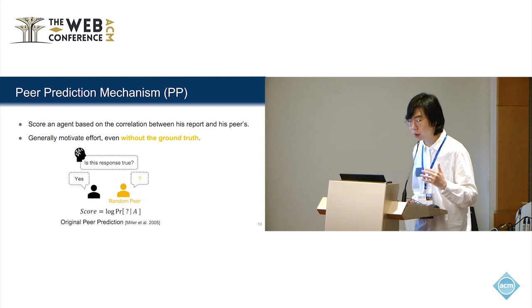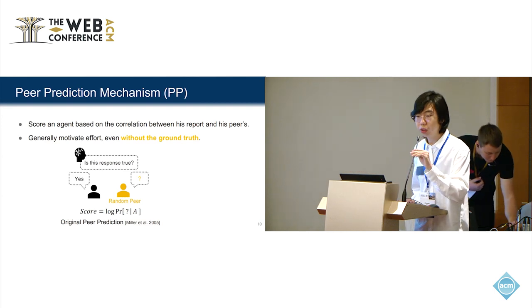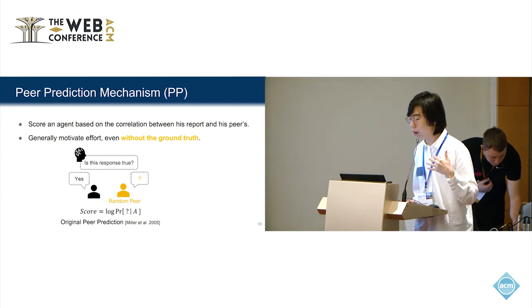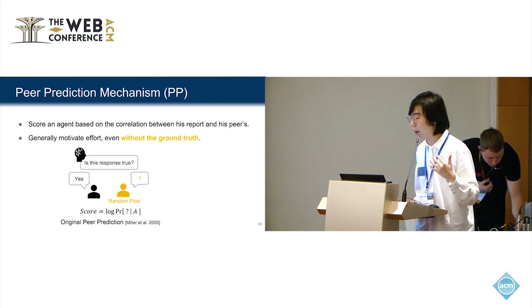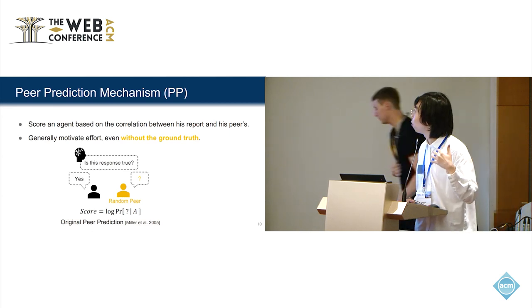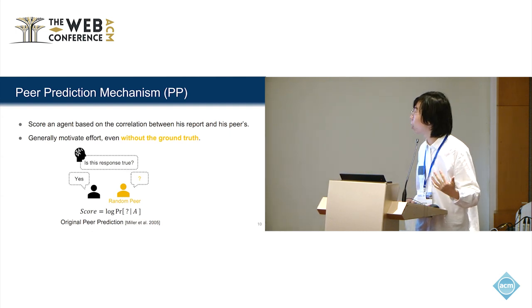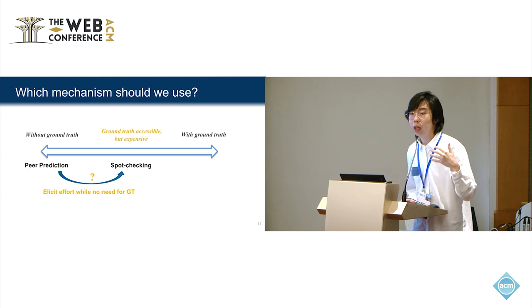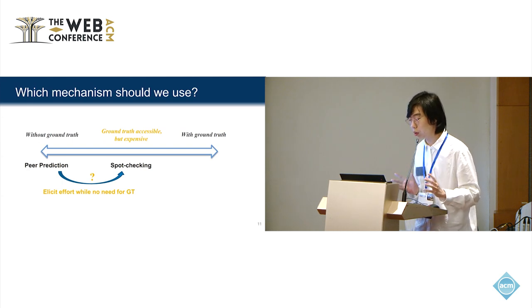We first talk about how to deal with the problem of accessing the ground truth. Miller et al. proposed a mechanism called peer prediction. It scores the agent based on the correlation between his report and his peers. There's no need to access the ground truth, and it can generally promote effort. A family of peer prediction mechanisms has been proposed after Miller et al.